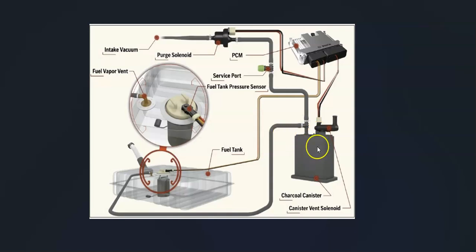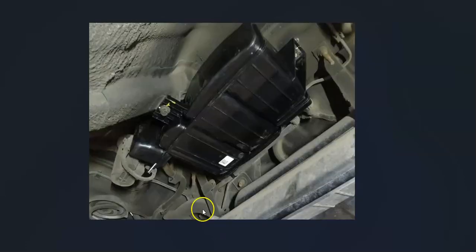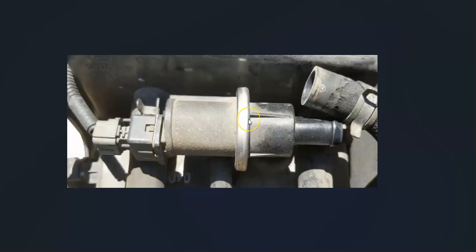If that all looks good, the only things really left to check would be the charcoal canister, the vent valve, and the fuel tank pressure sensor. The charcoal canister is going to be located up underneath the vehicle by the gas tank and it also usually contains what's called a vent valve. The onboard computer uses the vent valve to test the system. The vent valve is usually located inside of the charcoal canister, sometimes it can be separate but it's usually located inside of it.